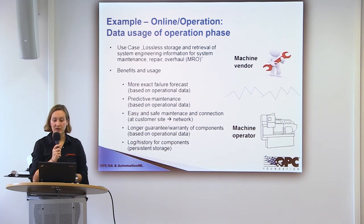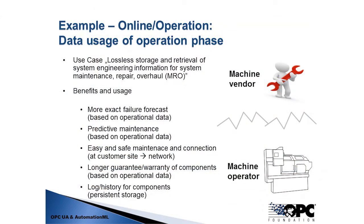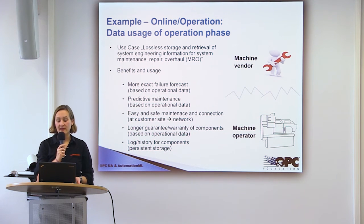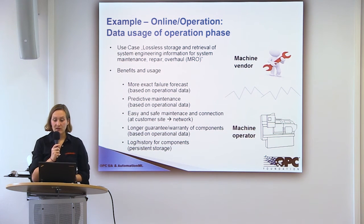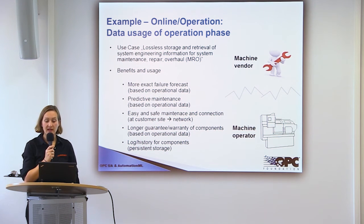For example, if we have a machine vendor and a machine operator, the machine vendor can use this combination for lossless storage and retrieval of system engineering information for system maintenance, repair, and overhaul. This means we can have more exact failure forecasts based on operational data, mechanisms for predictive maintenance, and the possibility to easily and safely maintain and connect to components at the customer side. The result could be that the machine vendor provides longer guarantees or warranties, and we have a persistent log or history for running components.